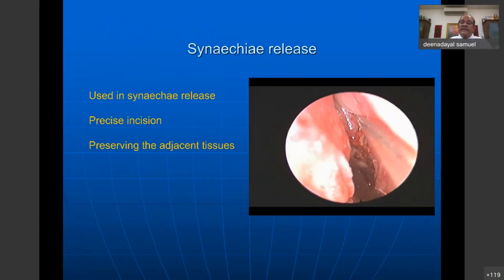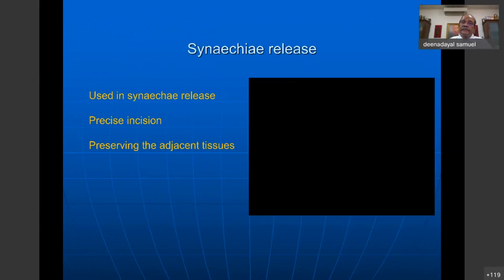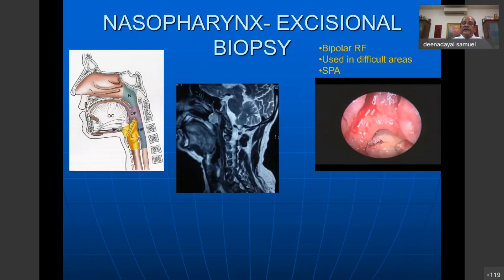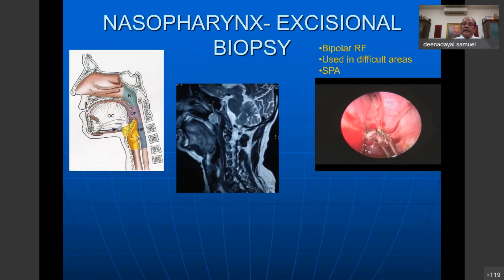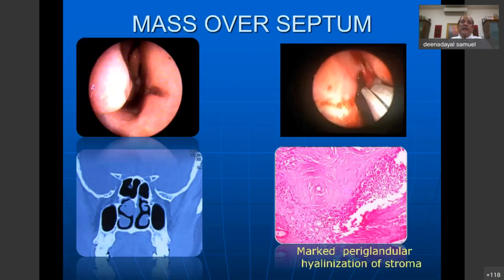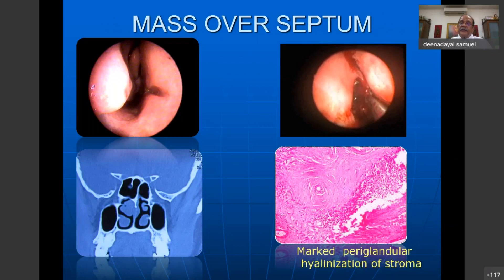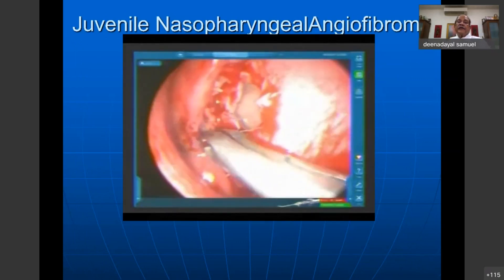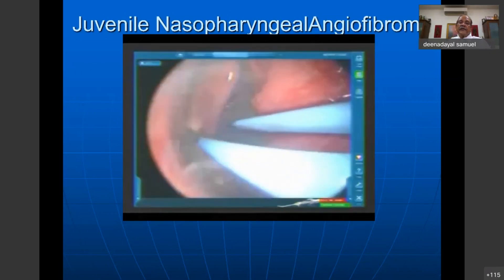Bipolar radio frequency can be used to coagulate, ablate, and remove masses. Septal masses are removed with radio frequency. Juvenile nasopharyngeal angiofibromas have also been removed with radio frequency using a bipolar application, along with old instruments and a debrider. In this case, a navigation system was used. Lateral rhinotomies were done with radio frequency to remove masses in the medial canthus of the eye.